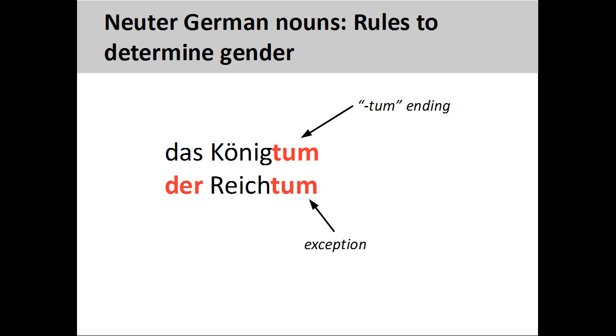Nouns ending in '-tum' will generally be neuter, such as 'Königtum' (kingship), although there are some exceptions to this rule, such as 'Reichtum' (riches).